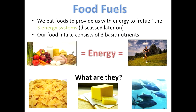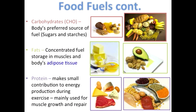Our food intake consists of three basic nutrients. Any ideas what they might be? If you thought carbohydrates, fats and protein, then you're right. Carbs are the body's preferred source of fuel, including bread and pasta. Fats are more concentrated and include nuts and margarine. And protein, which makes a small contribution to energy production, comes in the forms of legumes, fish and eggs.